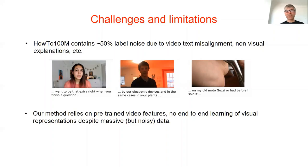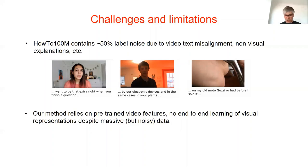What are the challenges and limitations? First, the data is very noisy: transcriptions are not perfect, text and videos are often not aligned — sometimes people talk about things before they do them, sometimes after, sometimes they never talk about what they're doing. Another limitation is that in this work we did not actually train visual representations from scratch — the video features were trained on the supervised Kinetics dataset, which is a different domain. It would be interesting to see what happens if we try to learn video features from our data and whether we can compete with supervised representations trained on Kinetics.